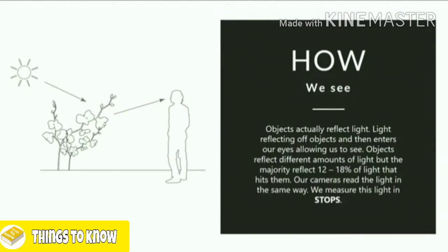Don't worry if that seems a little complicated right now — it'll make much more sense when we put this into practice. For those who are more advanced, you may be familiar with 18 percent gray and gray cards. This is why they exist — they are exposure aids based on this principle that 18 percent of the light is being reflected off any object.